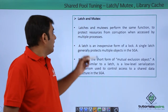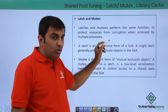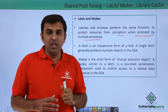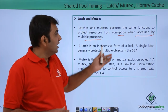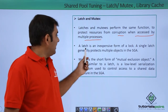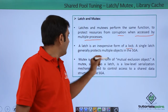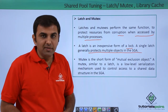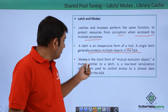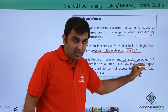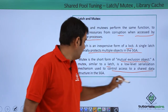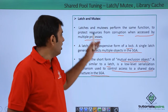Latch and mutex perform the same function: to protect resources from corruption when accessed by multiple processes. The latch is an inexpensive form of lock. A single latch generally protects multiple objects in the SGA. Mutex is short for mutual exclusion object — a low-level serialization mechanism used to control access to shared data structures in the SGA.